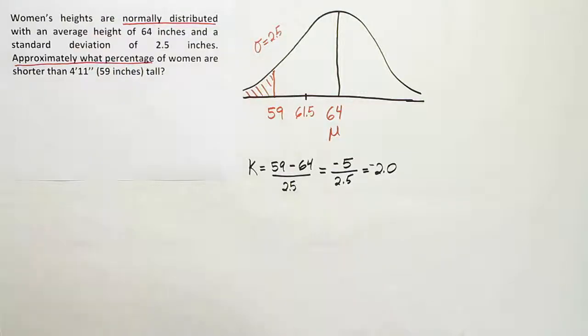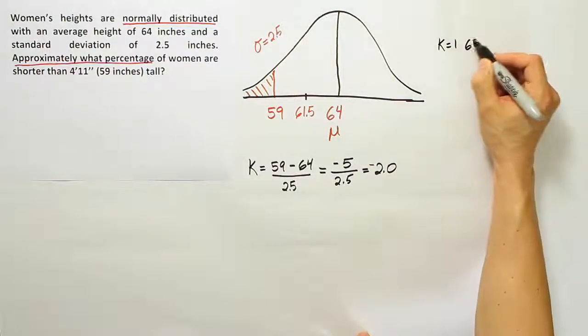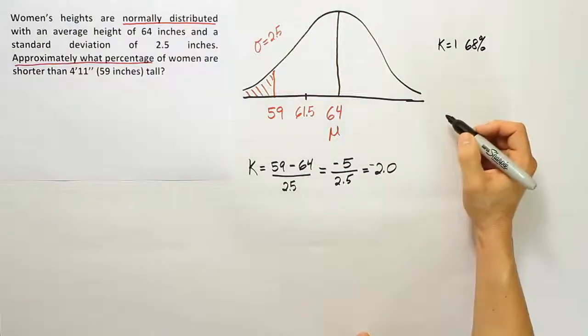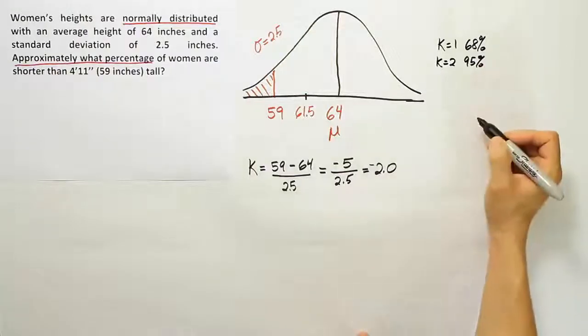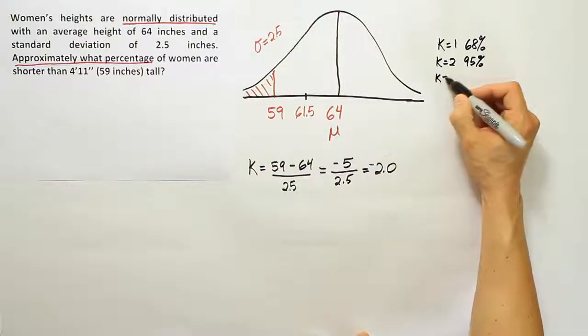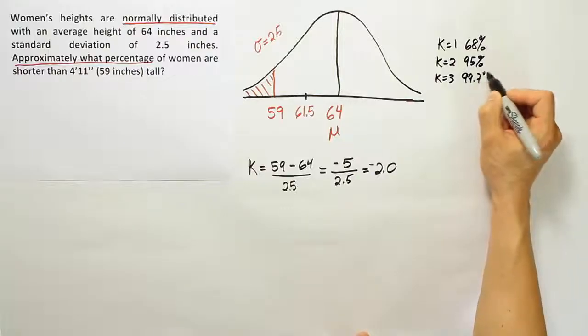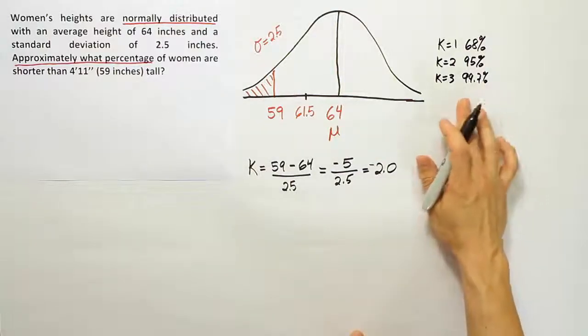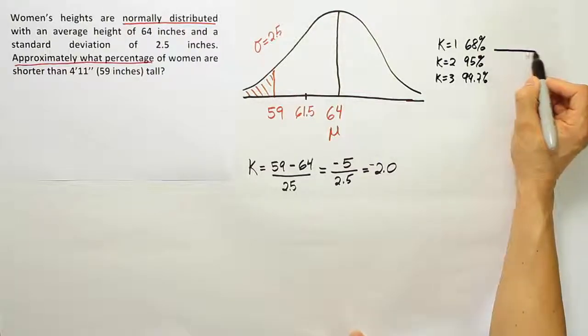Okay. Now, once I've figured out that, then from there, I have to work with my rule. So I have to know the empirical rule and figure out what it tells me. So we have some rules. We say that when k is equal to one, that corresponds to 68% of the data approximately. When k is equal to two, it corresponds to an interval that captures 95% of the data. And when k is equal to three, it corresponds to an interval that captures 99.7% of the data.